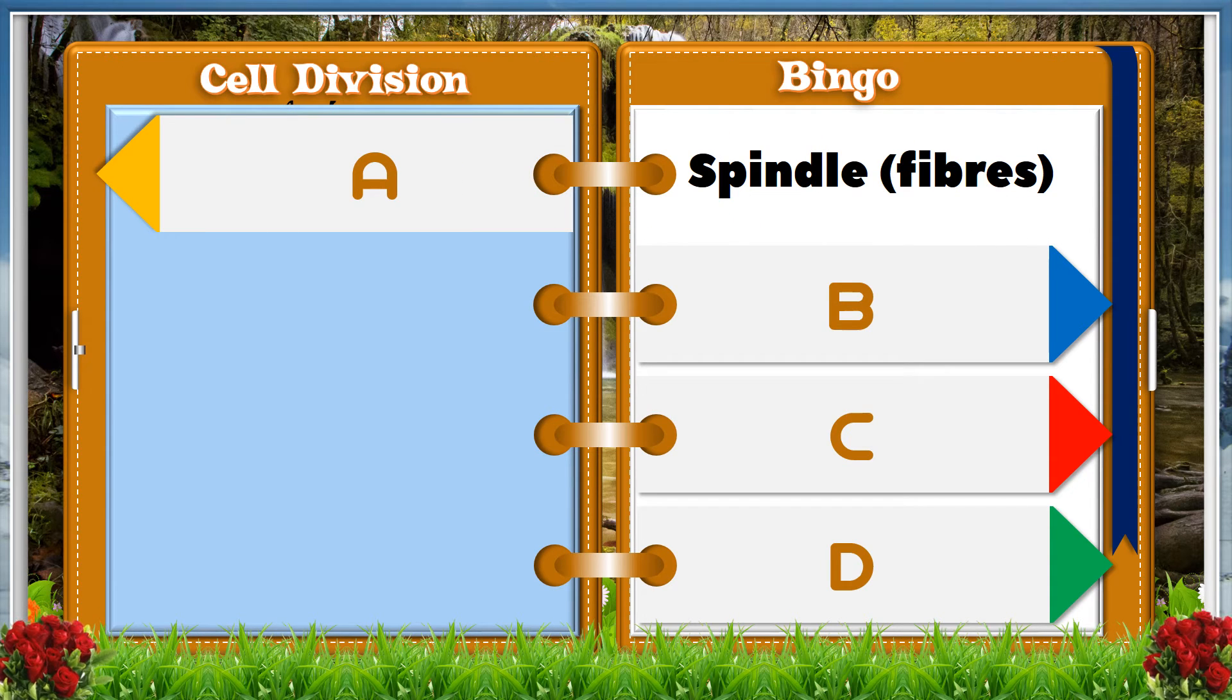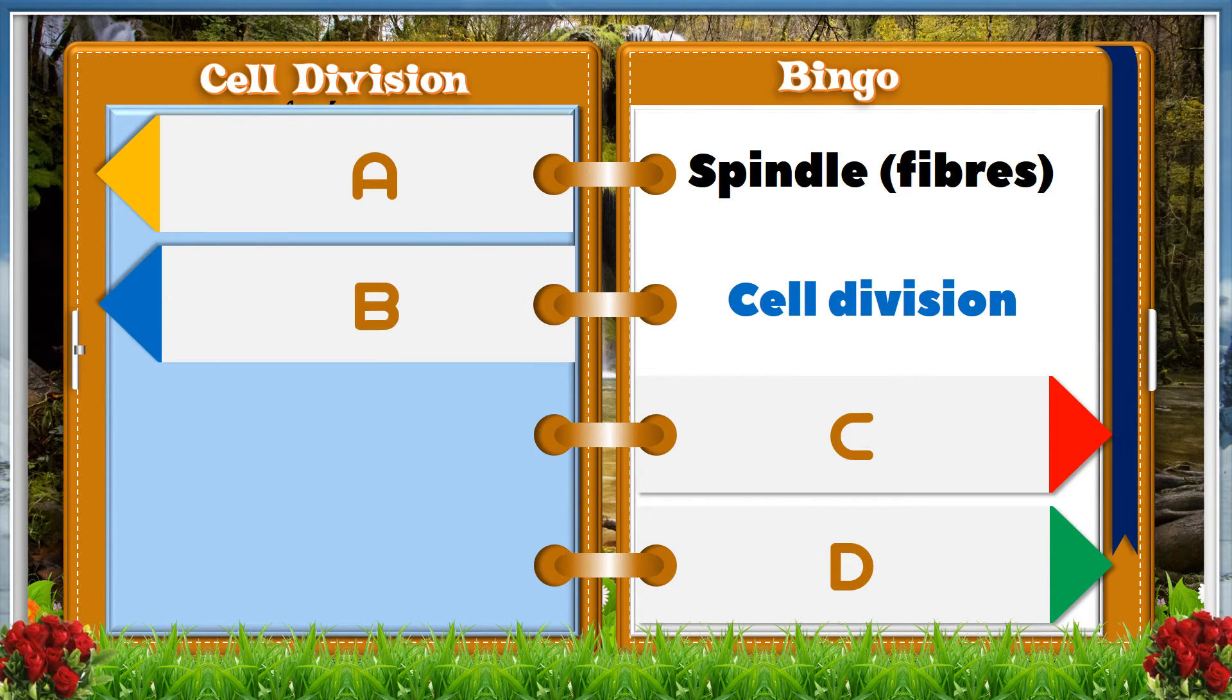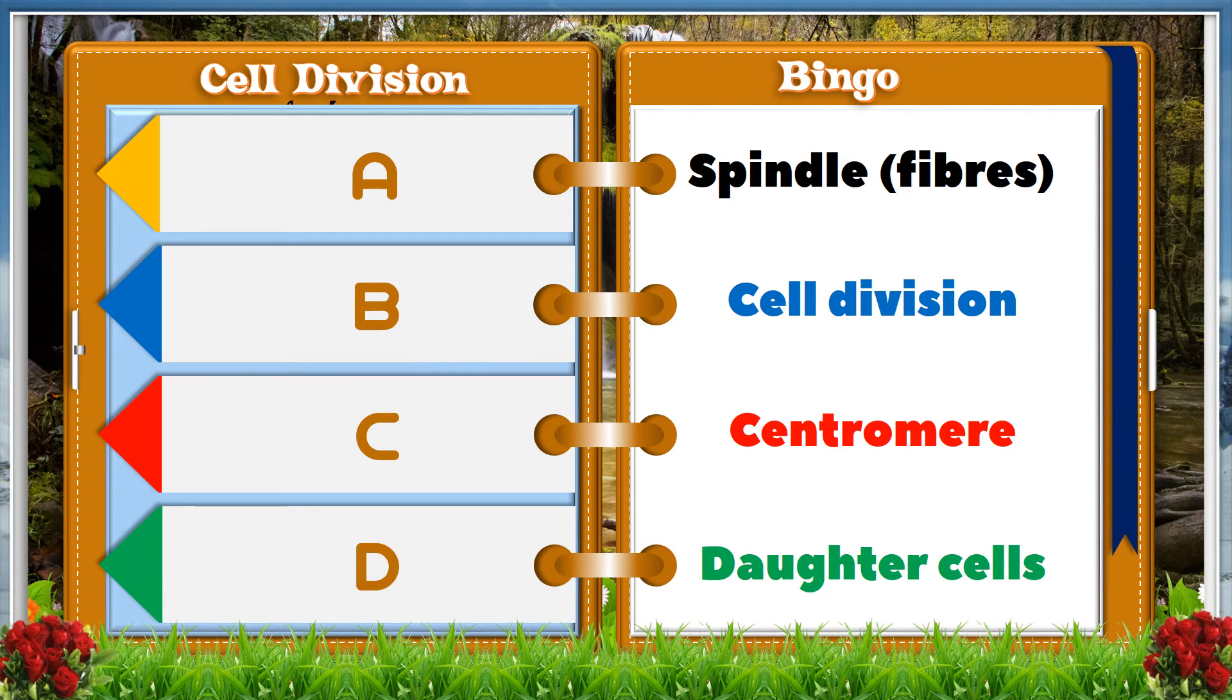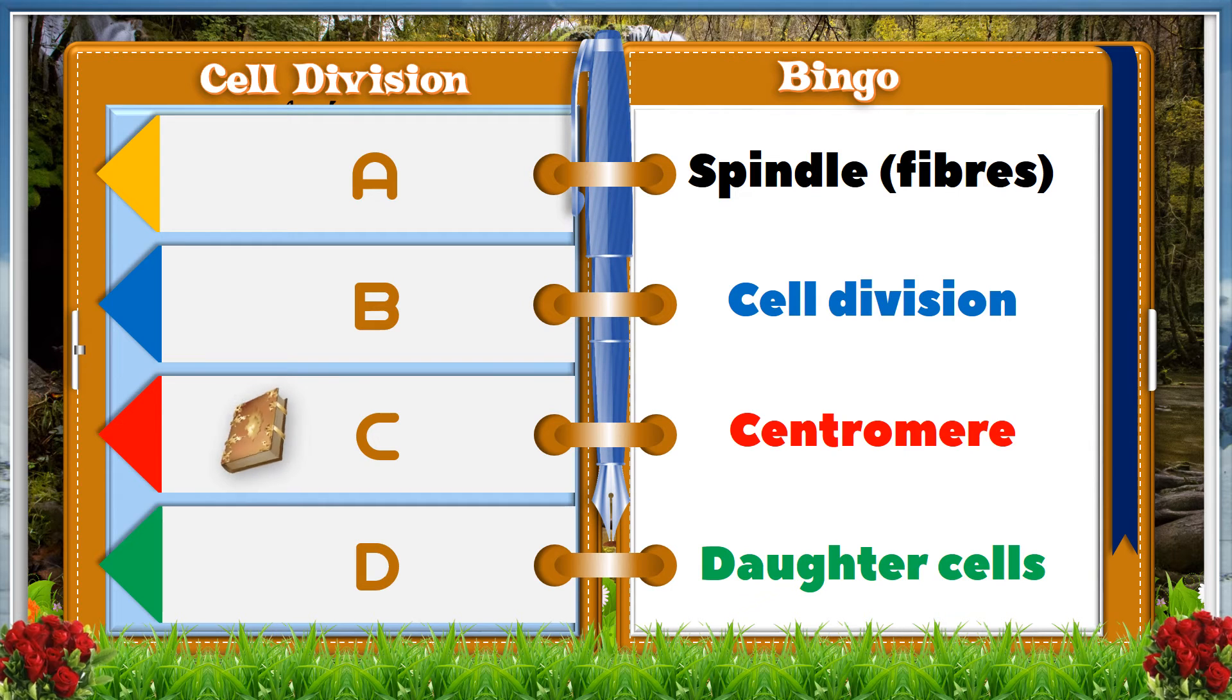A spindle fibers, B cell division, C centromere, D daughter cells. And the answer is C centromere.